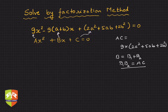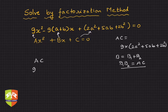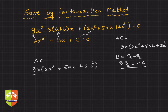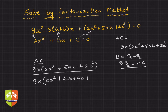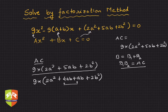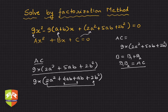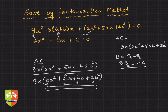First, let's factorize a×c. So a×c is 9 × (2a² + 5ab + 2b²). This itself requires splitting the middle term. We can write 5ab as 4ab + ab. I did this because 4 + 1 = 5 and 4 × 1 = 4, and 2 × 2 = 4, so the product condition is satisfied.